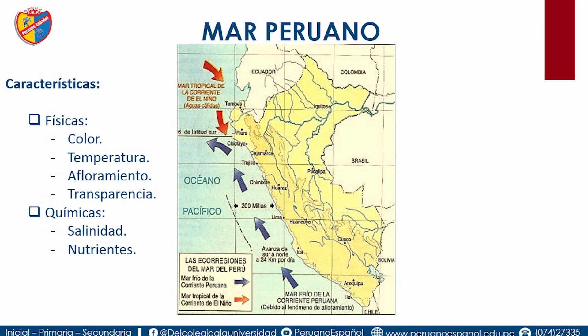Su temperatura: las aguas son frías en la corriente de Humboldt y aguas cálidas en la corriente del mar tropical o corriente del Niño. Las aguas frías se deben a la presencia del afloramiento y por la corriente peruana. El afloramiento es el descenso de aguas cálidas y el ascenso de aguas frías de sus profundidades, lo que lleva nutrientes que absorbe el fitoplancton.